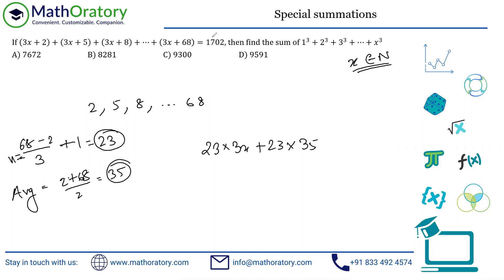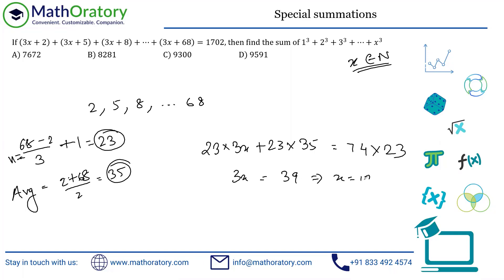Dividing 1702 by 23: 23 × 7 = 161, so 1610 accounts for most of it; 1702 − 1610 = 92 = 23 × 4, giving 74. So 1702 = 23 × 74. Cancelling 23 from both sides: 3X + 35 = 74, so 3X = 39, giving X = 13.